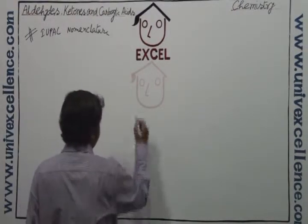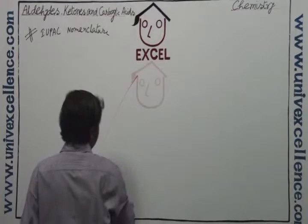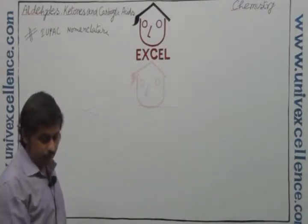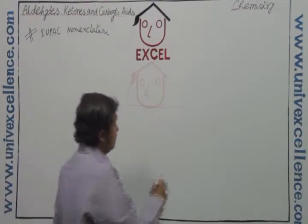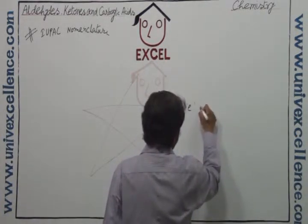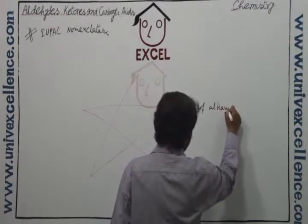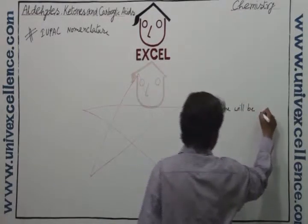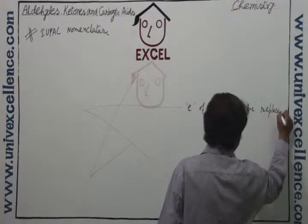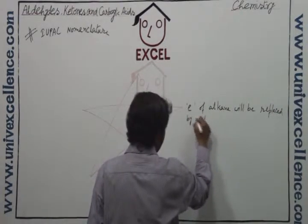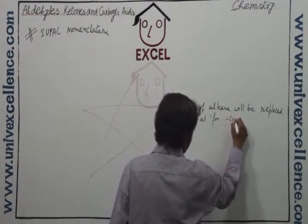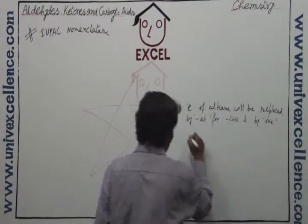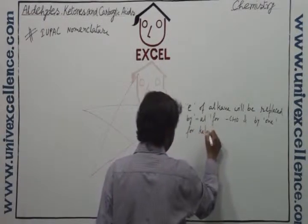Summarized by the adhan pattern, through which we can say the first rule is that the E of alkane will be replaced by -al for CHO (aldehyde) and by -one for ketone.